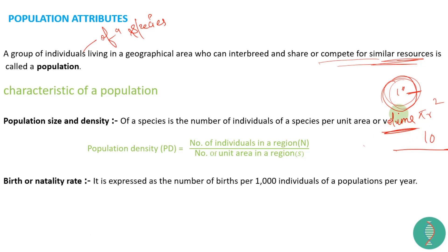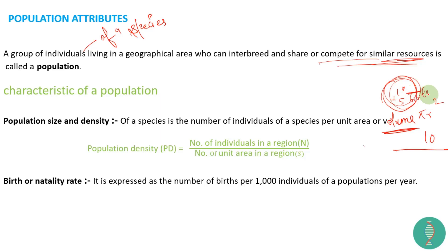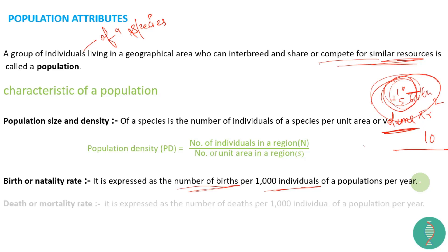Birth rate, or natality rate, is expressed as the number of births per thousand individuals of a population per year. Similarly, death rate is expressed as the number of deaths per thousand individuals of a population per year.